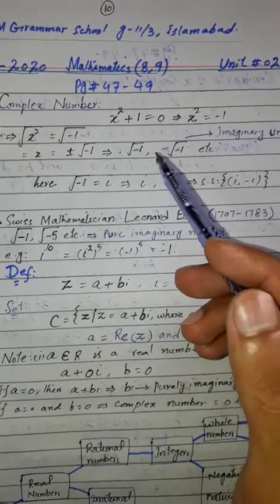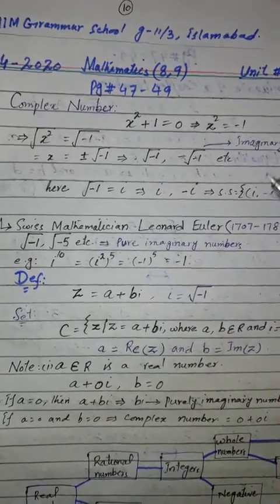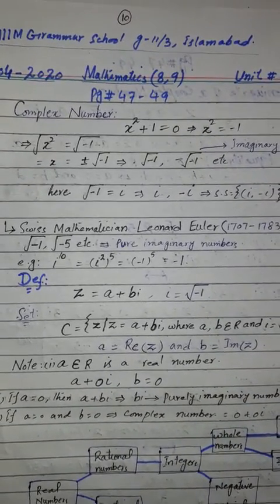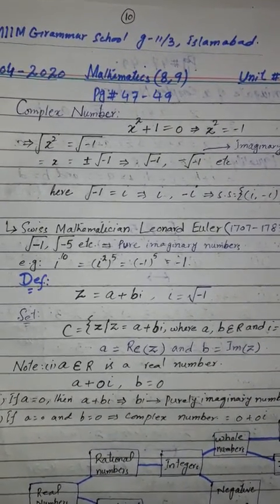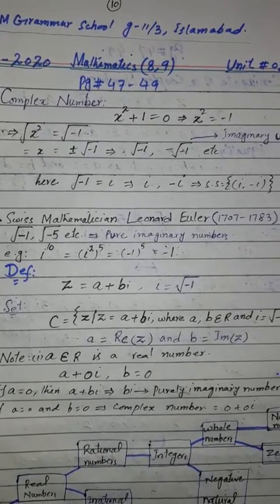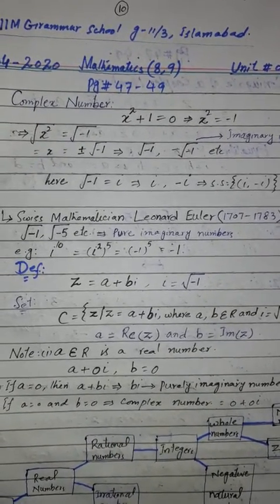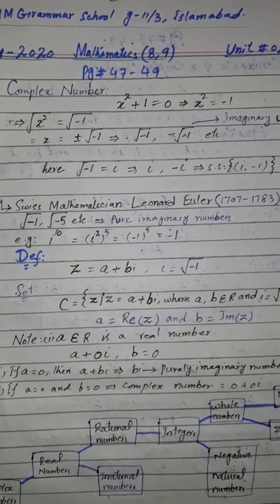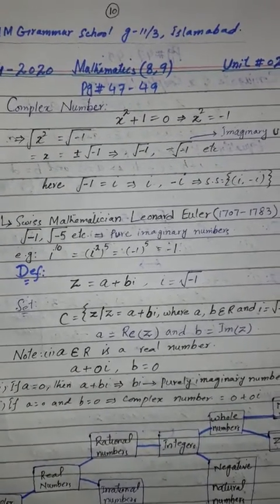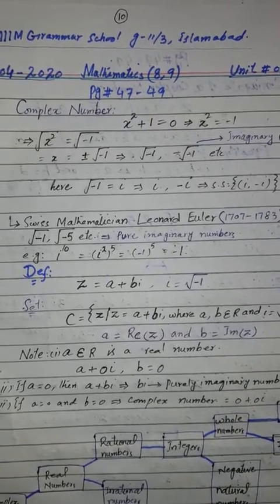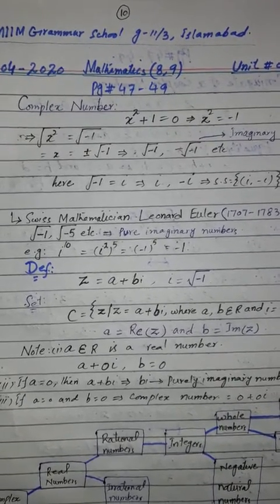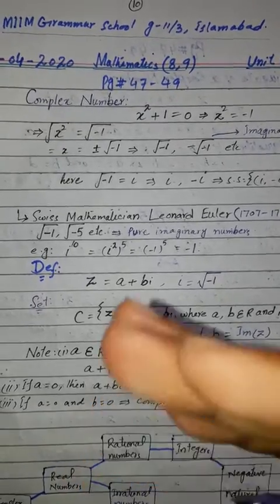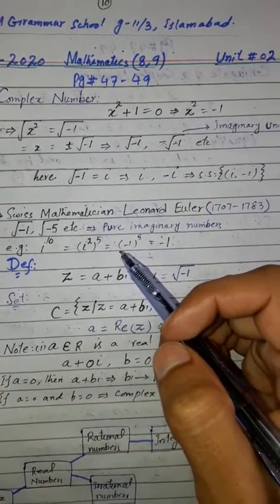If a negative number is squared, it becomes positive — for example, minus 2 squared means minus 2 multiplied by minus 2, and minus times minus gives plus, so the result is positive. This means the square of any real number is non-negative.